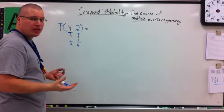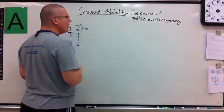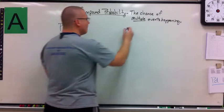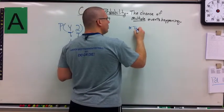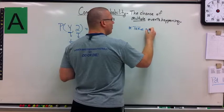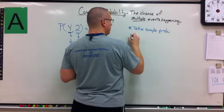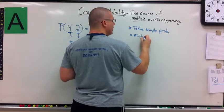Now, all I need to do in dealing with compound probabilities is multiply them together. So what I'm going to do is take my simple probabilities, and I'm going to multiply them together.